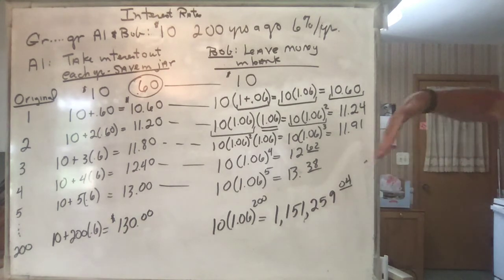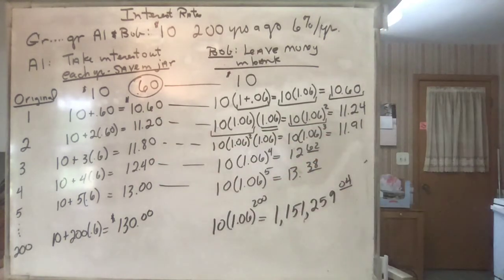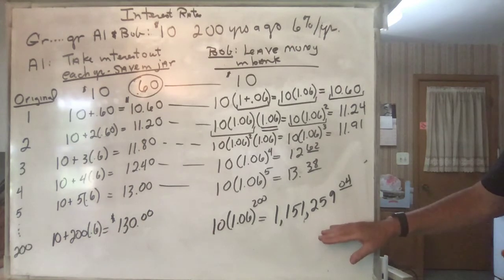It's over a million dollars. Okay, over a million dollars you get by watching that exponential growth grow up. So there's a great example to show the difference between linear growth and exponential growth. And that's why you want to have your money in the bank.